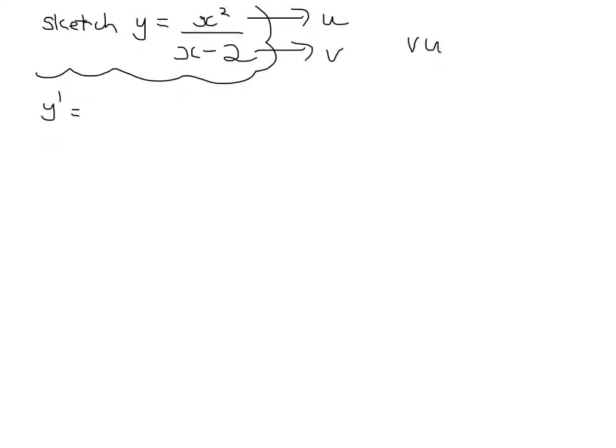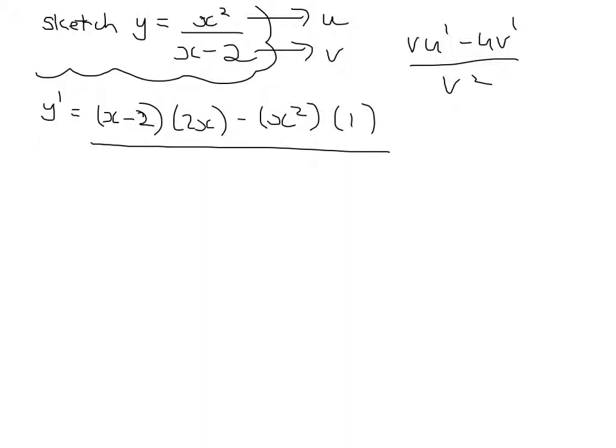You know it's v u dash minus u v dash all over v squared. So that's x minus 2 into 2x minus x squared into 1 all over x minus 2 all squared.